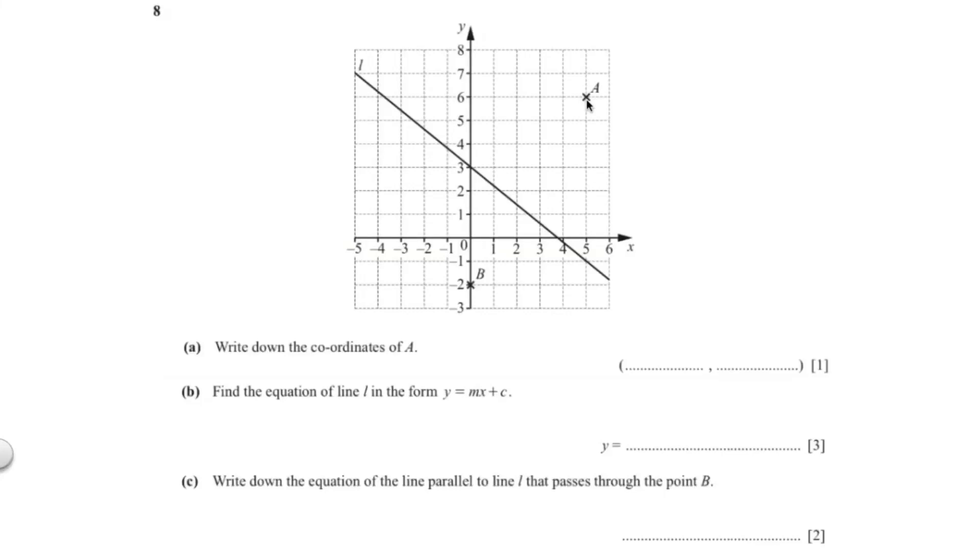These questions are all about the straight line graph. So let's start with question A. Write down the coordinates of A. This should be easy. So that is 5 and 6.